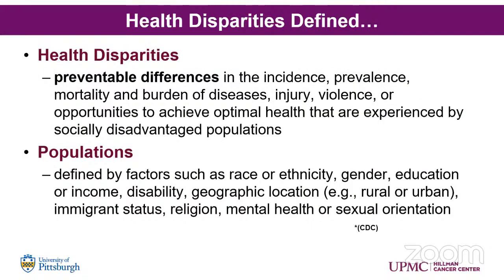Health disparities are preventable differences in incidence, prevalence, mortality, and burden of disease, injury, violence, or opportunities to achieve optimal health that are experienced by socially disadvantaged populations. These populations are defined by race or ethnicity, gender, and other factors. Geographic location is important — whether someone lives urban versus rural — as is immigrant status and sexual orientation.